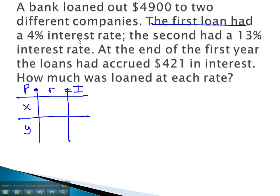The first loan has a 4% interest rate. This is .04 as a decimal. The second loan has a 13% interest rate. This is .13 as a decimal. We calculate interest earned by multiplying principal times the rate, giving us .04x and .13y.